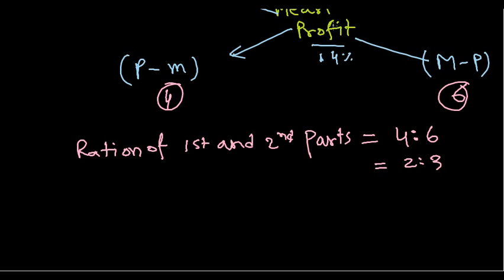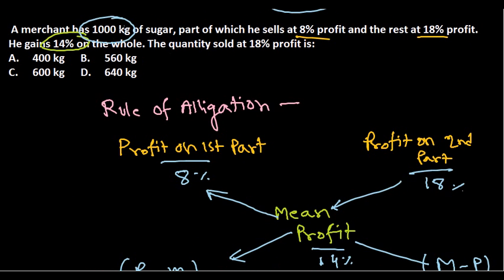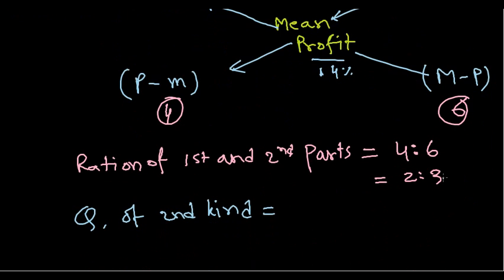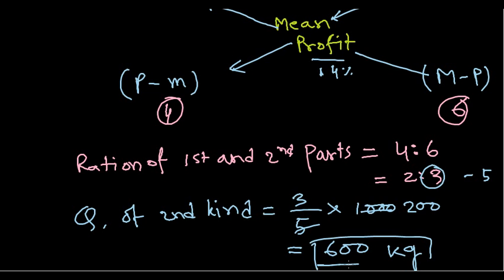So here, what can we put now? Quantity of the second kind—we know the overall quantity is 1000 kg. The quantity of the second kind means 3 out of 5. So the quantity according to ratio is 3/5 into the 1000 kg that we're having, so it's going to be 600 kg.